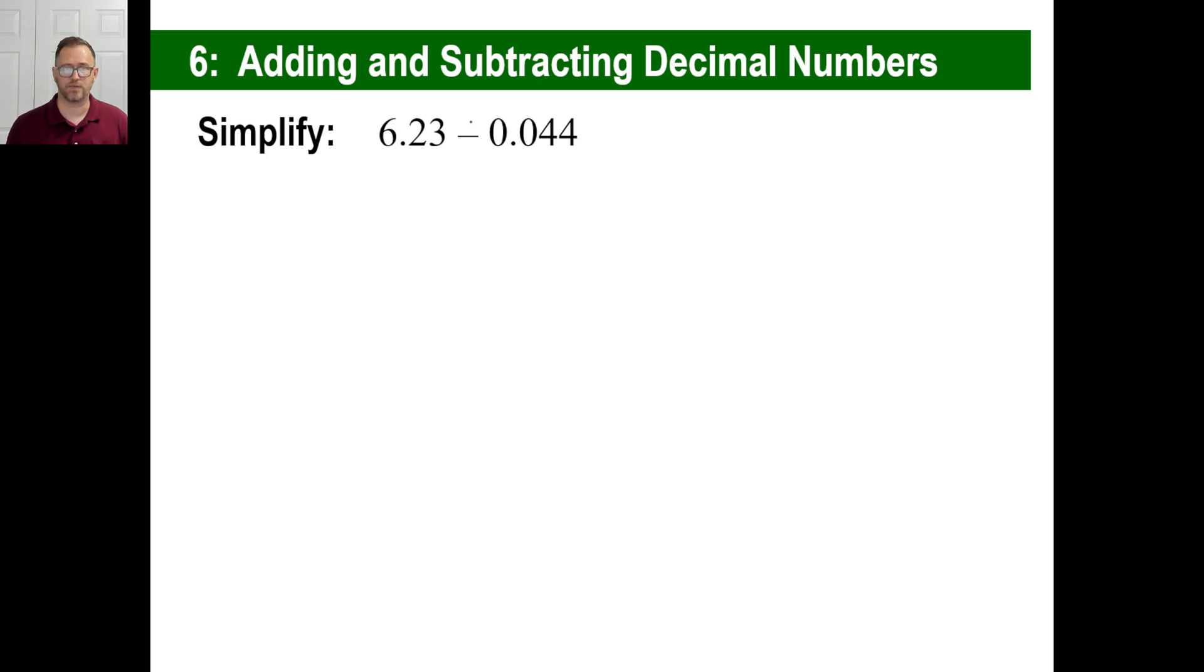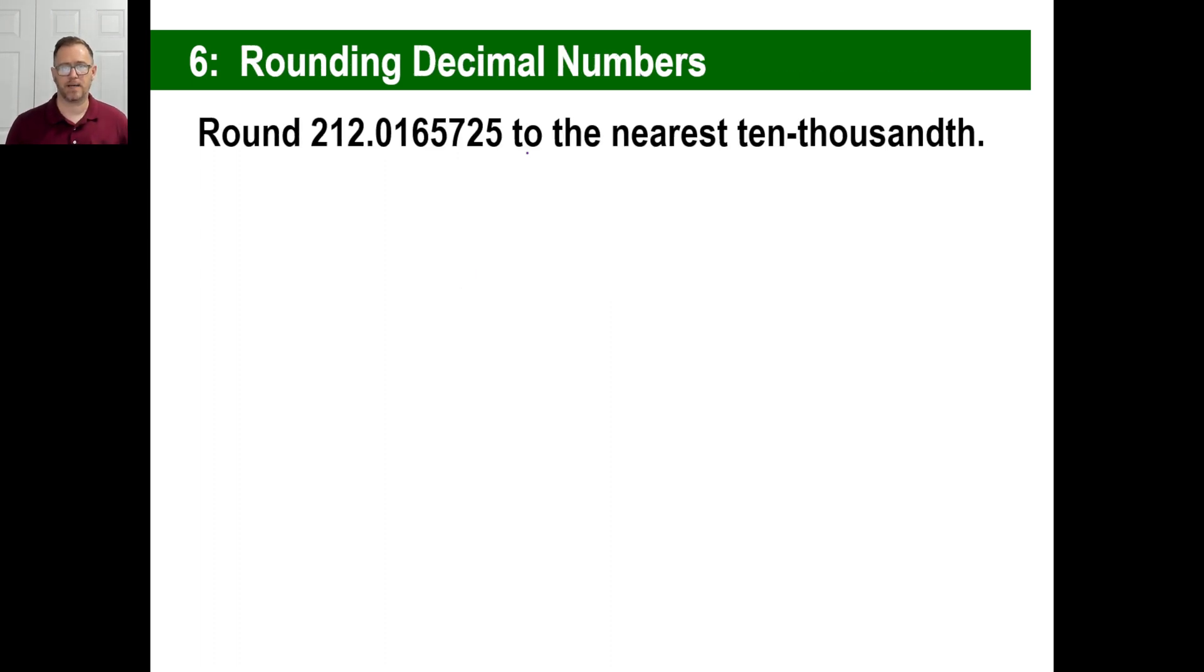Now, subtracting is a little different. You still line up the decimals. 6.23, I wouldn't worry about this yet. Let's just line up the decimals first. 0.044. Now you can put the subtraction so you don't get confused. But anyway, if there's nothing there, go ahead and stick a zero. Then you're just going to subtract right down. I'm not going to bother to do it. But make sure you have that exactly correct, make sure you have the decimals lined up.